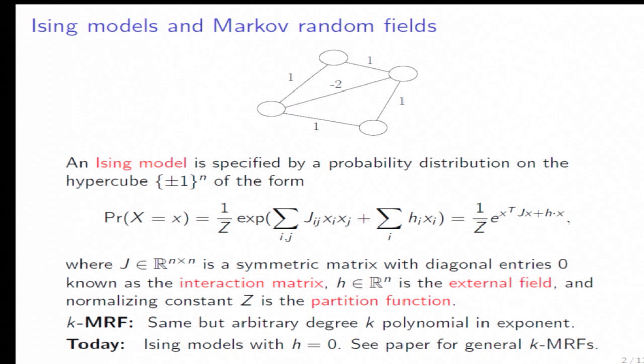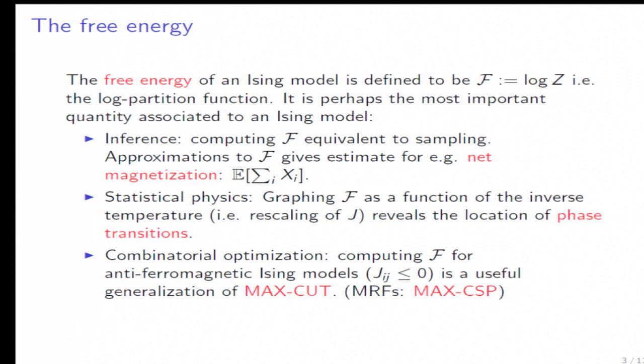And of course, there's no reason you need to stop at quadratic polynomials. So you can put any, say, degree k polynomial into that exponent, and that would be known as a k-Markov random field. So we have results for all k-Markov random fields, but I'll only talk about Ising models with h = 0 just to simplify things.